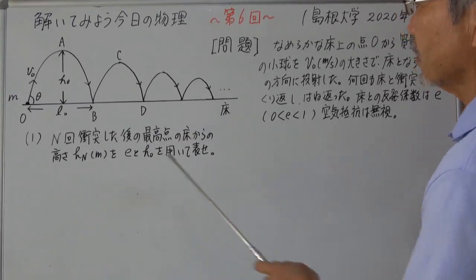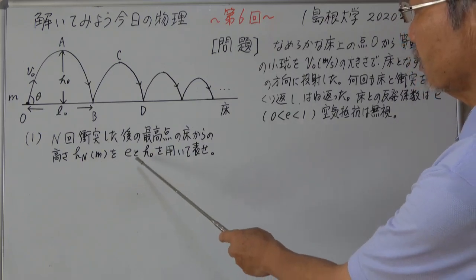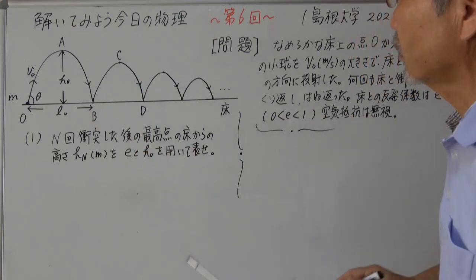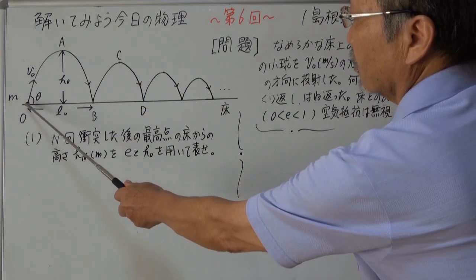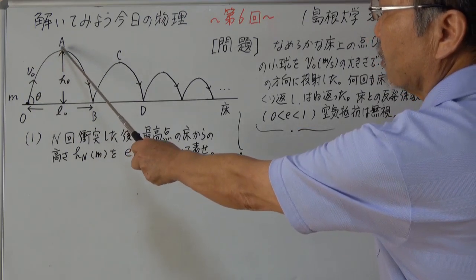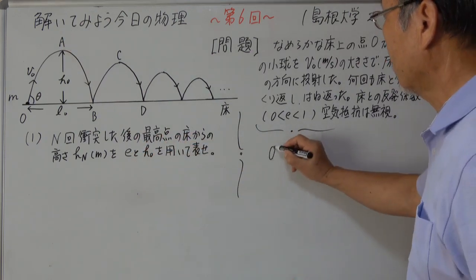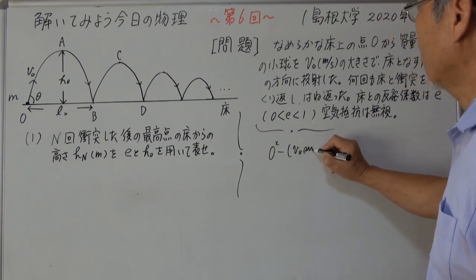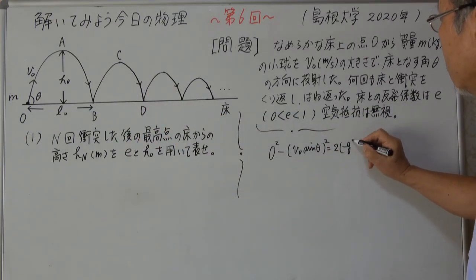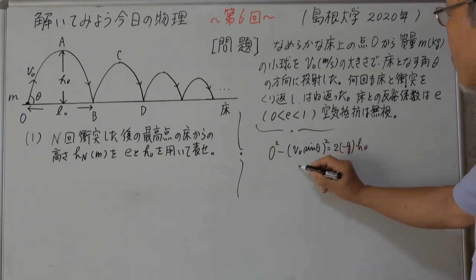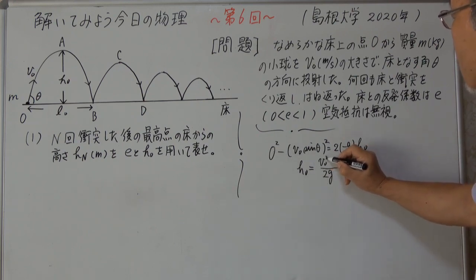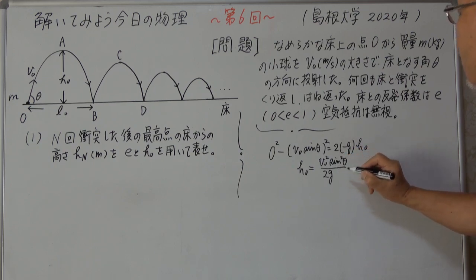1番です。N回衝突した後の最高点の床からの高さをEとH0を用いて表せ。まずH0はどう表せるかというと、鉛直方向成分はV0sinθ。最高点では鉛直方向速度は0になりますから、0²－(V0sinθ)²＝-2gH0となり、H0＝V0²sin²θ／(2g)です。